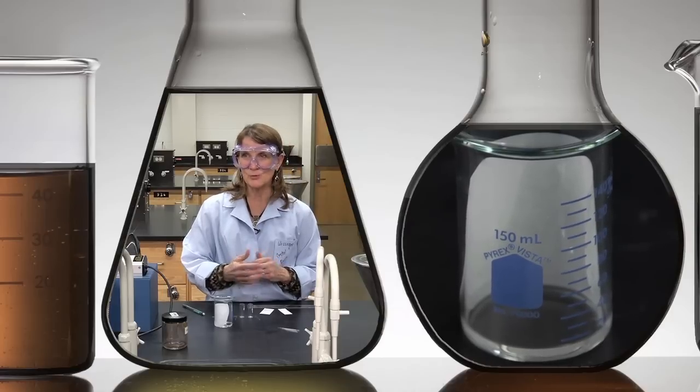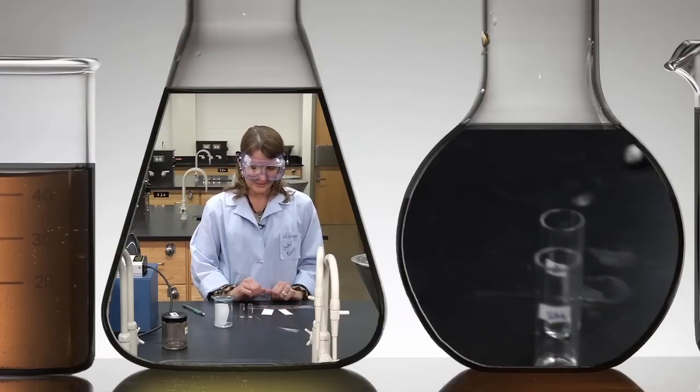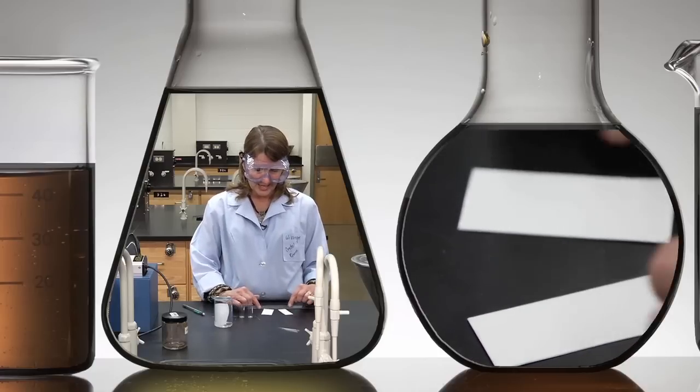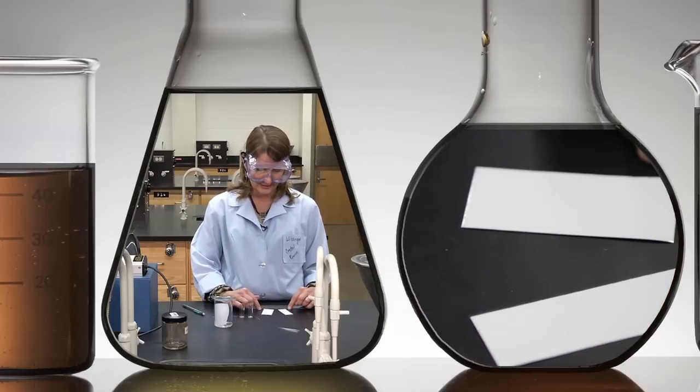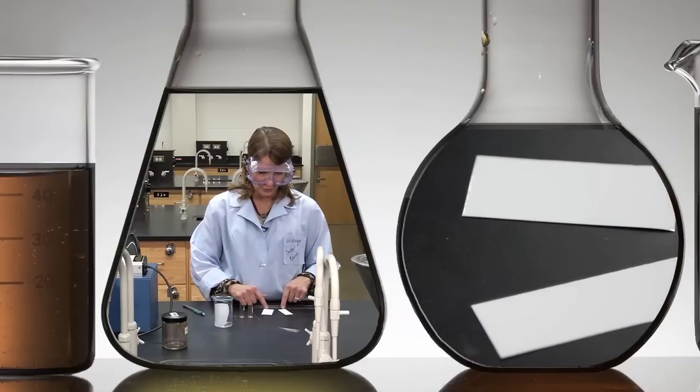The next thing we want to do is spot our TLC plates. The TLC plates will be given to you in lab and you want to choose an end, so look carefully at the TLC plates and choose an end that's not chipped, one that's most uniform.